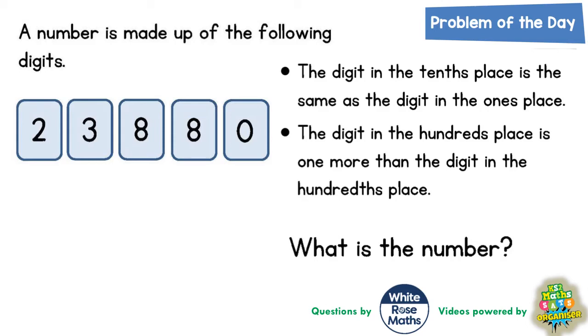Welcome problem solving fans to another problem of the day and this one is all about place value and some clues. It says a number is made up of the following digits and the clues we are given are as follows.